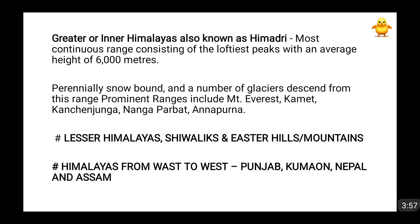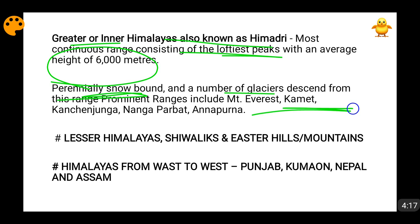Now we talk about the great or inner Himalayas, also known as Himadri. They have one of the highest peaks — the average height is 6000 meters — and many perennially snow-bound glaciers are present. They include the Kamet range, Kanchenjunga peak, Nanga Parbat peak, Annapurna peak, and the most well-known Mount Everest, which is the highest at 8,848 meters above sea level.